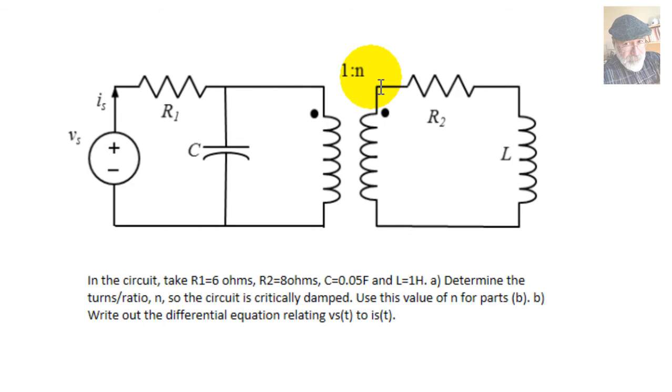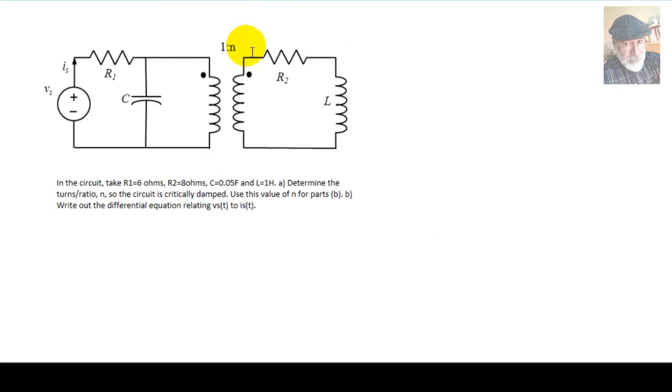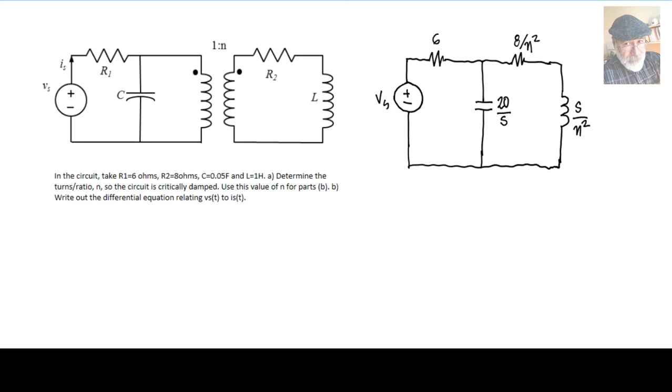And then you will have this circuit. In this circuit, of course, the voltage source, the 6 ohms resistor, and this capacitor's impedance have not changed, because they remain on the side they were in on the circuit on the left.